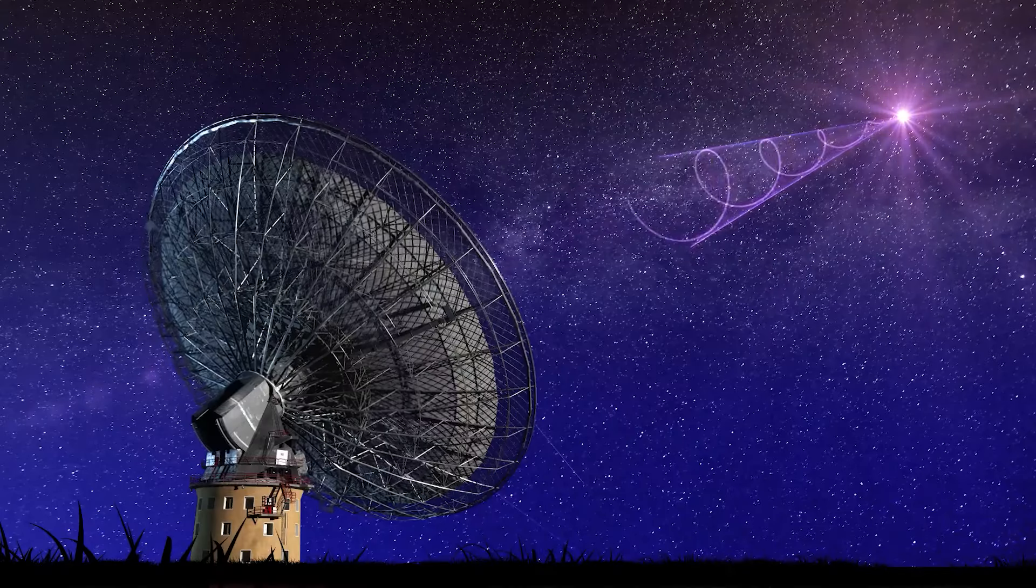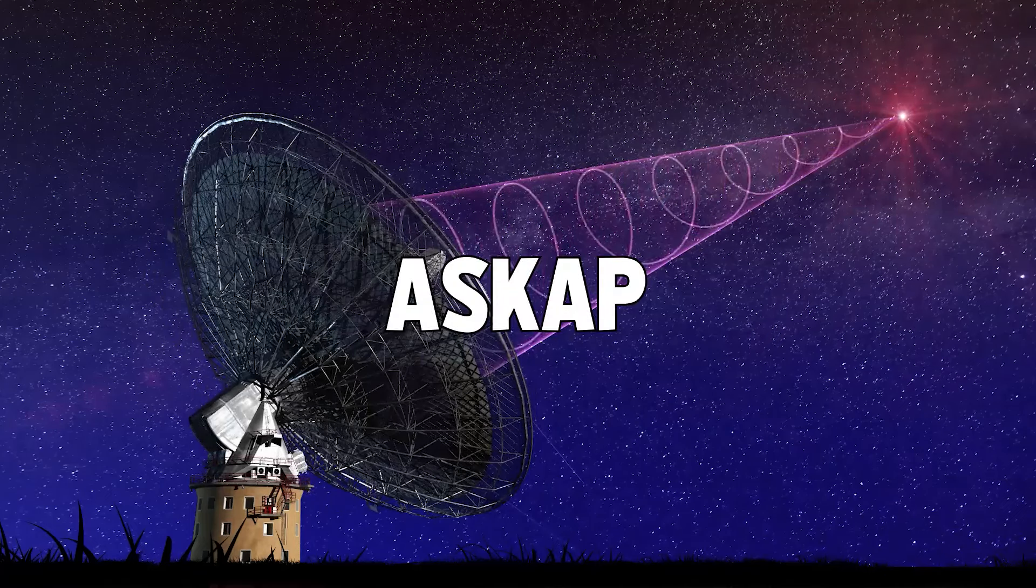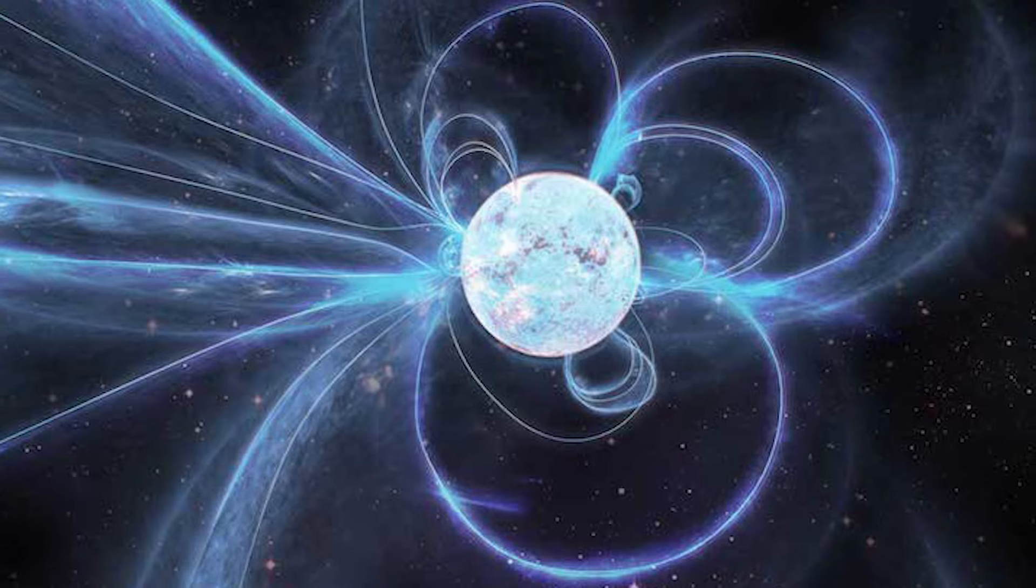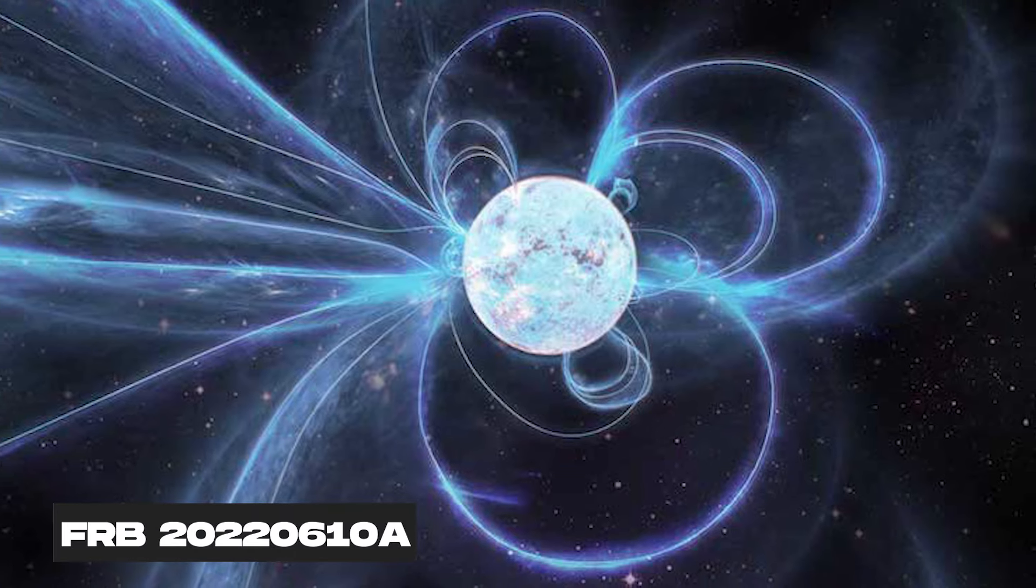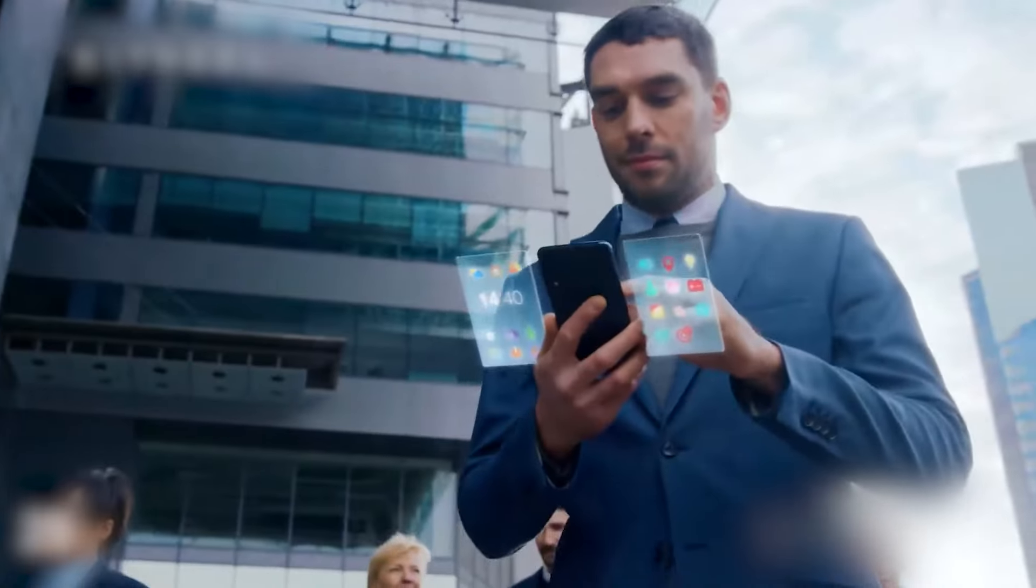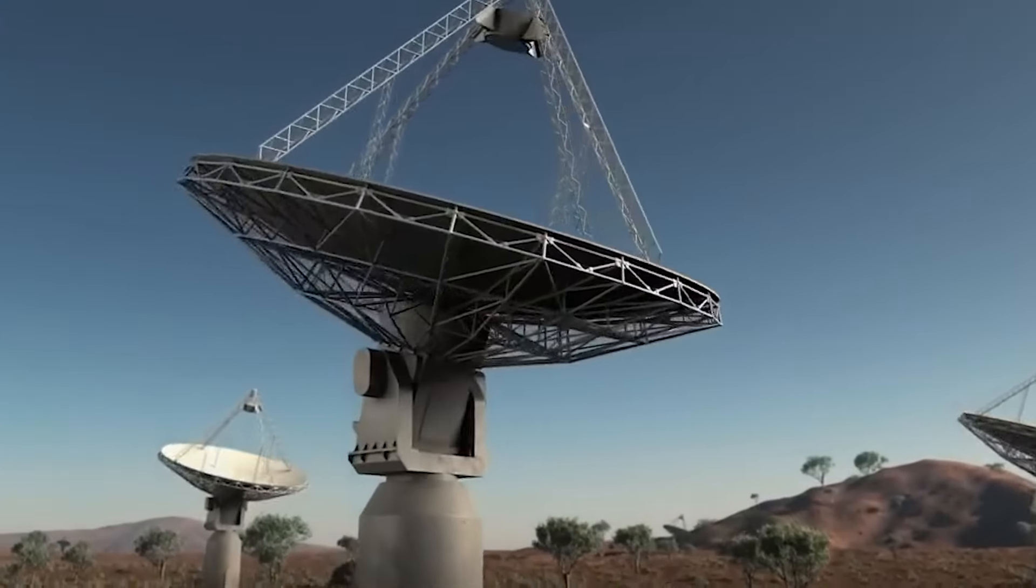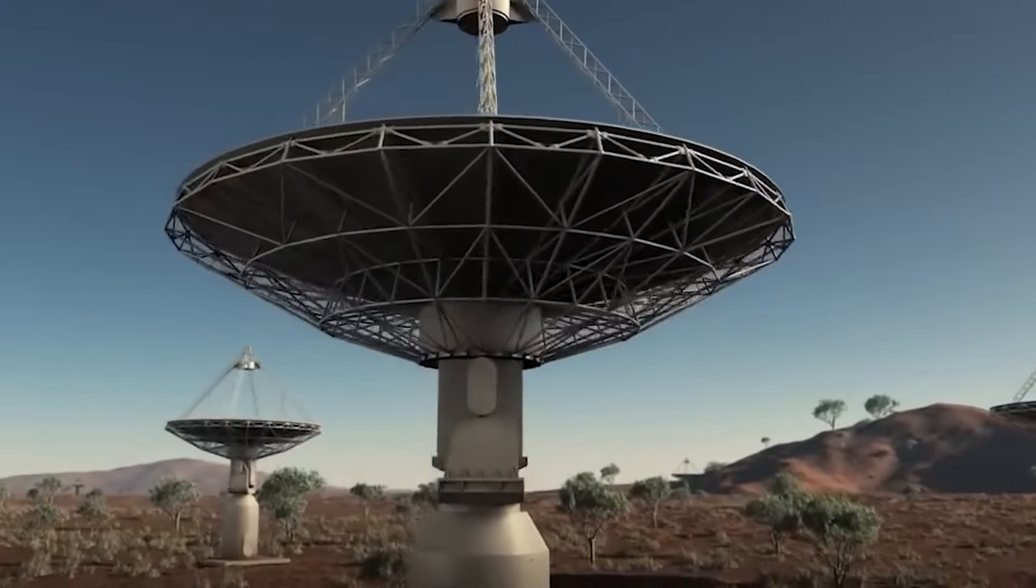This FRB was detected by a radio telescope called ASKAP in Australia on June 10th, 2022. It was named FRB 2022-0610A, which sounds like a boring password you'd use for your email account. But don't let that fool you. This FRB is anything but boring.